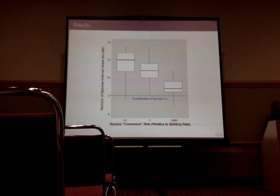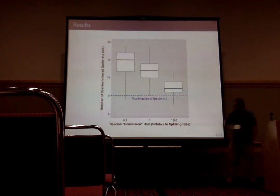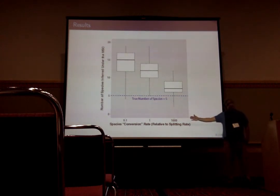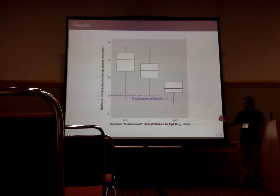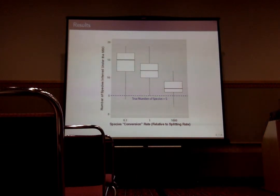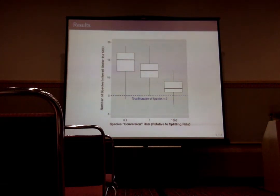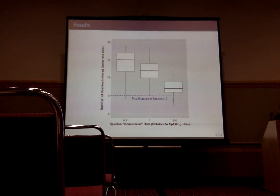I'm going to jump straight into the results. On the x-axis we have different species conversion rates — over here, a species conversion rate 1,000 times faster than the population isolation rate; over there, something much more realistic. On the y-axis, the number of species estimated by the multi-species coalescent. At really high species conversion rates — approximating the birth-death model assumption — we get close to the actual number of species generated (5). At much more realistic conversion rates, the multi-species coalescent grossly overestimates the number of species, because it is not estimating species — it is estimating random-mating populations.